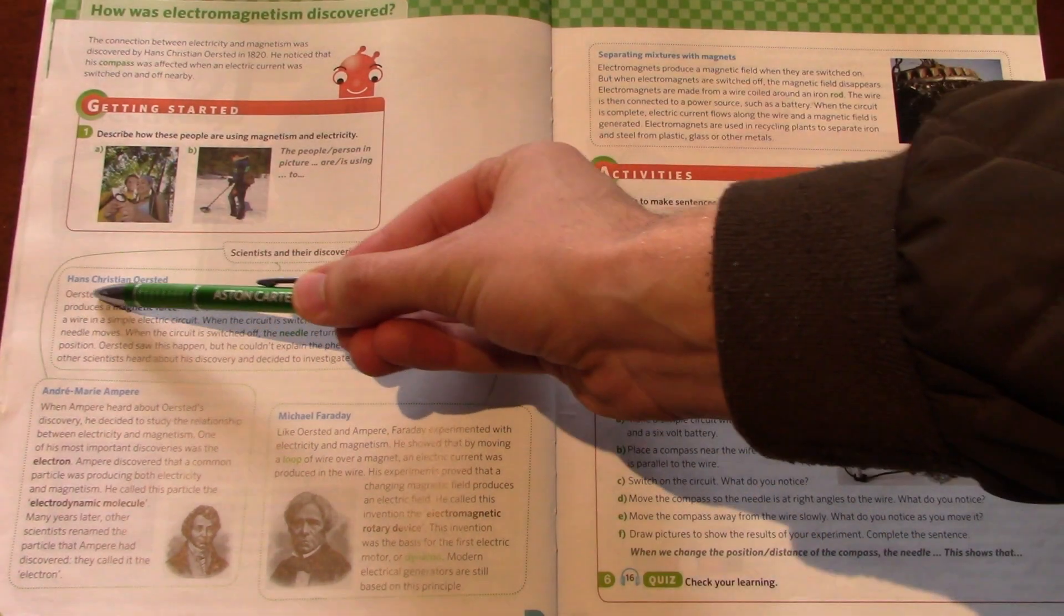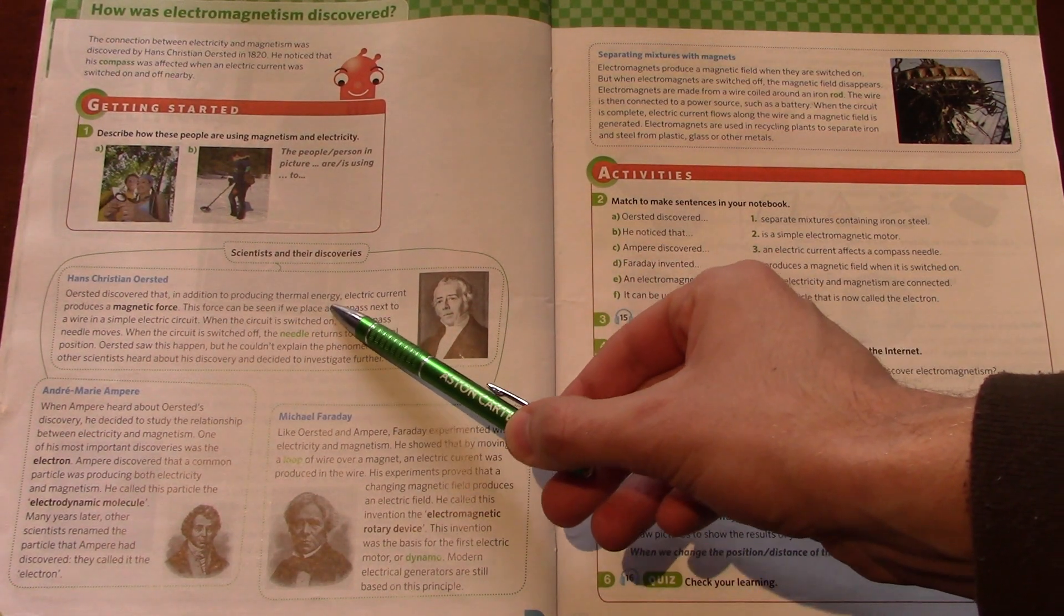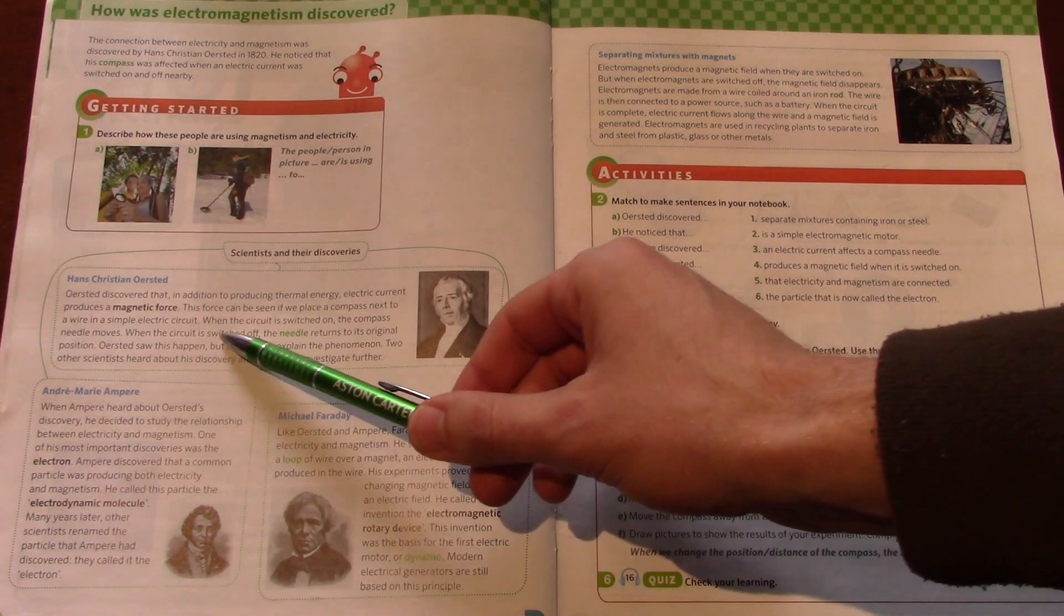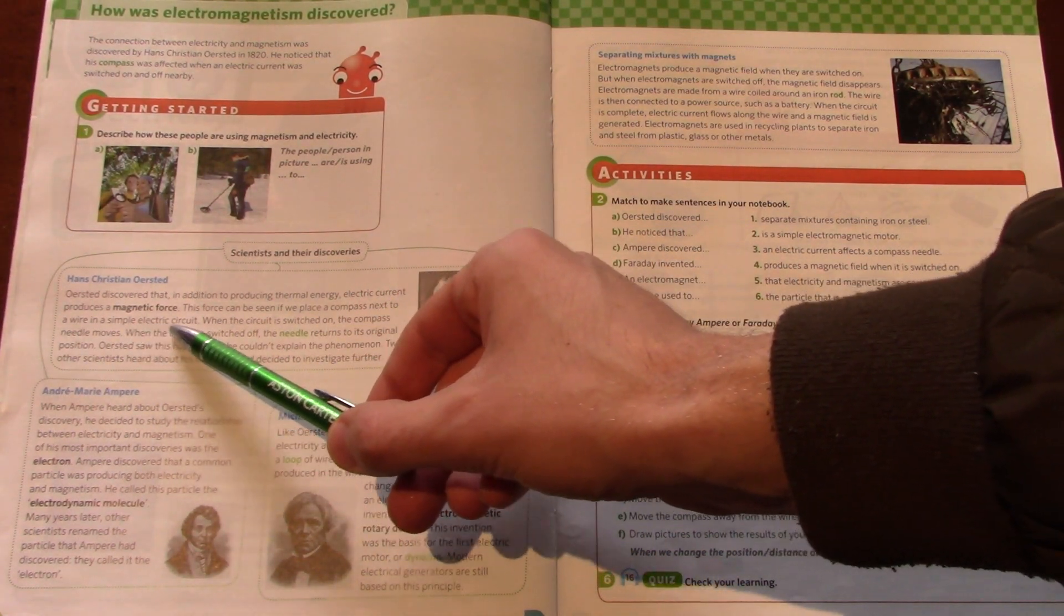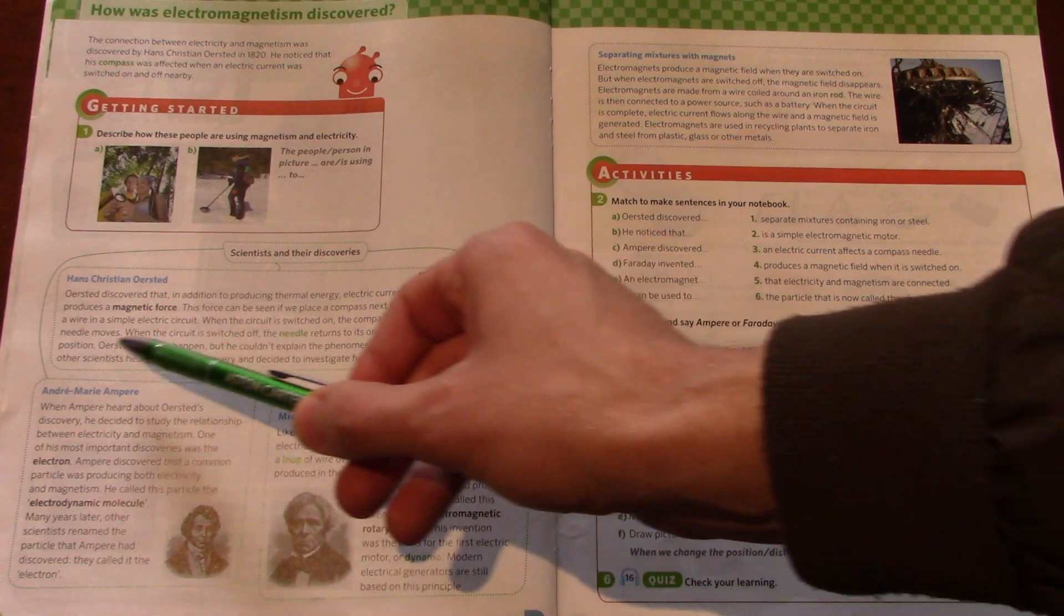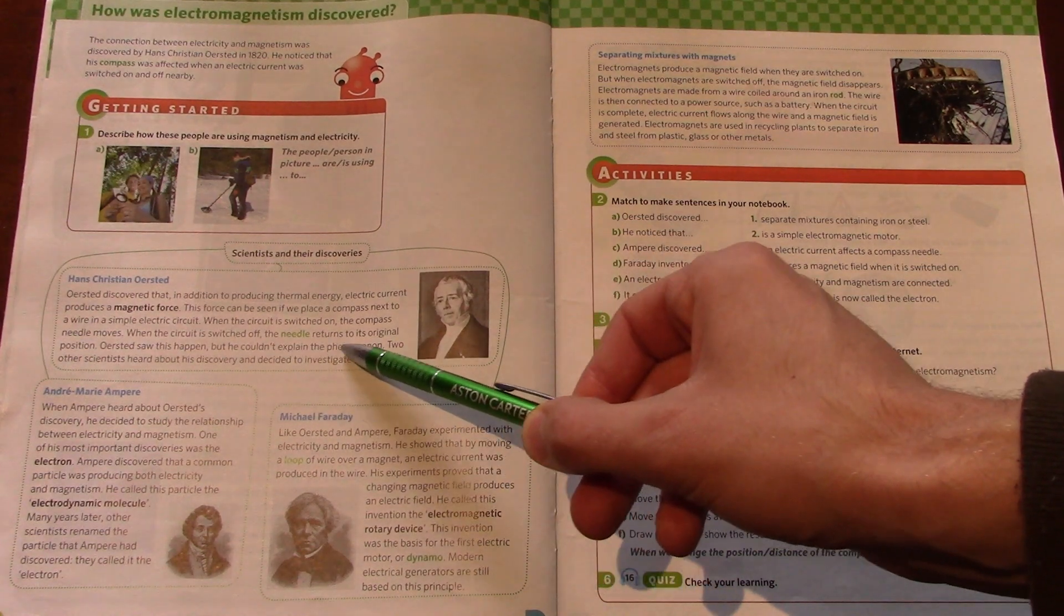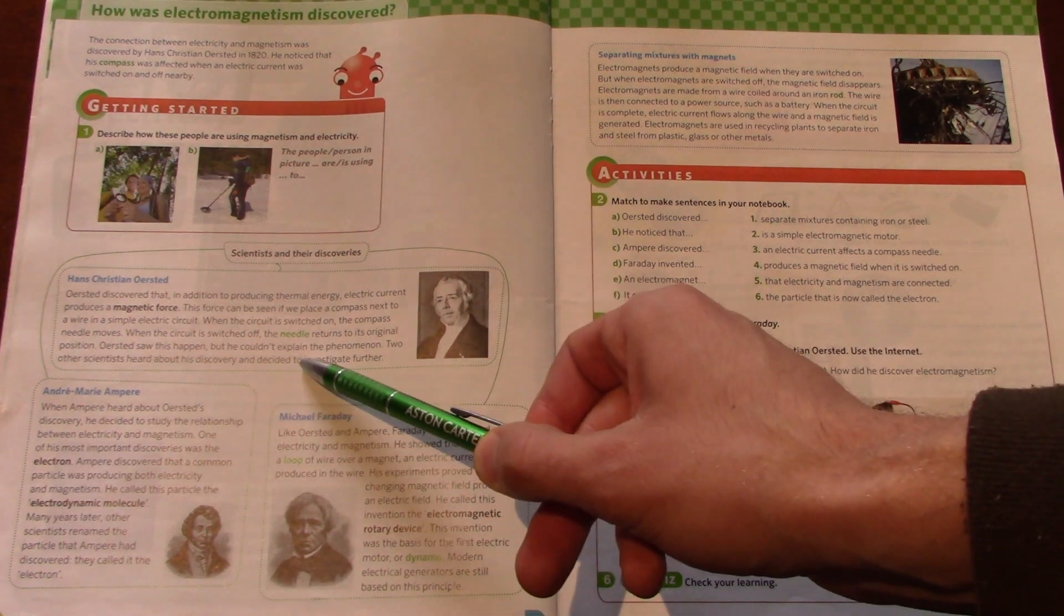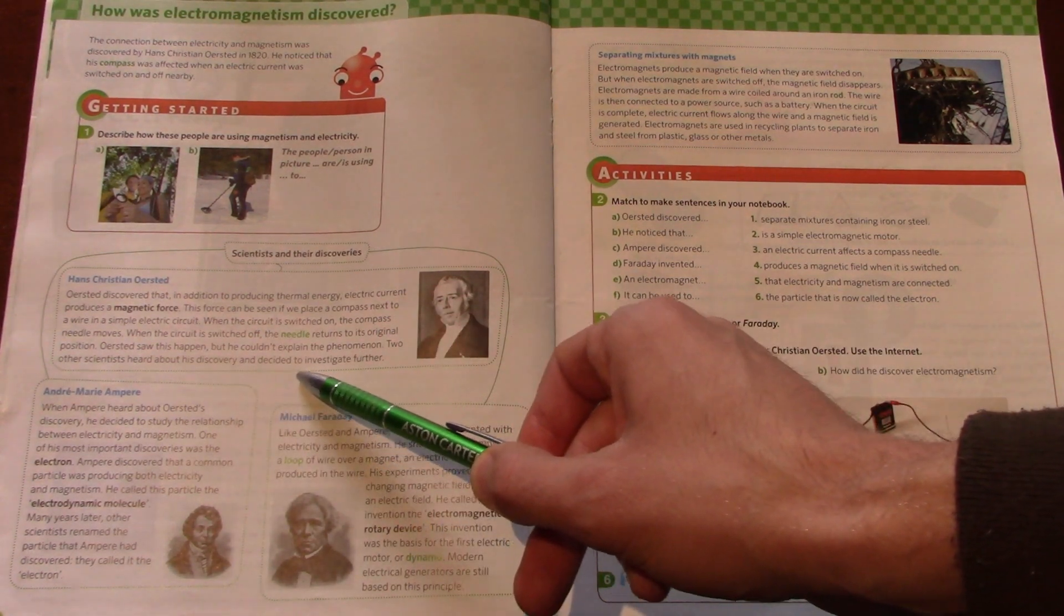So here we have Hans Christian Ørsted. Ørsted discovered that in addition to producing thermal energy, electric current produces a magnetic force. This force can be seen if we place a compass next to a wire in a simple electric circuit. When the circuit is switched on, the compass needle moves. When the circuit is switched off, the needle returns to its original position. Ørsted saw this happen, but he couldn't explain the phenomenon. Two other scientists heard about his discovery and decided to investigate further.